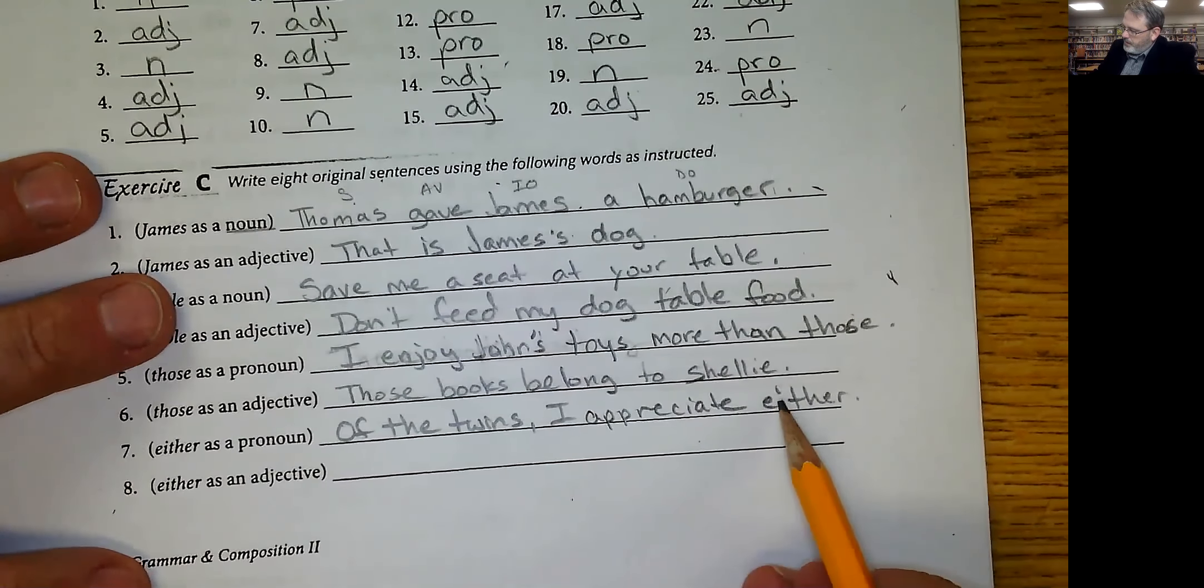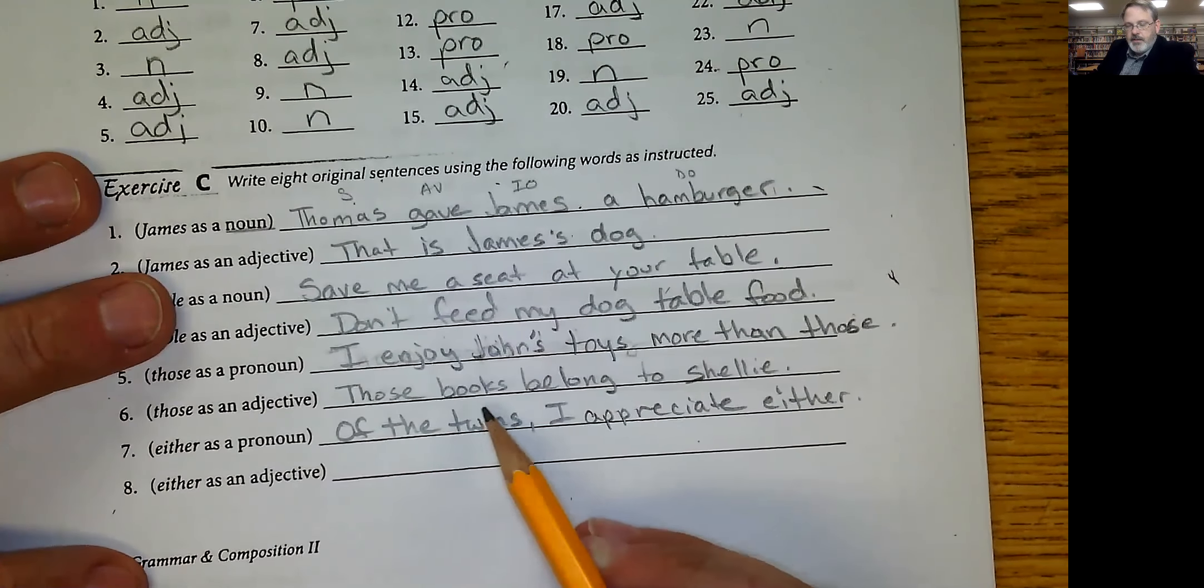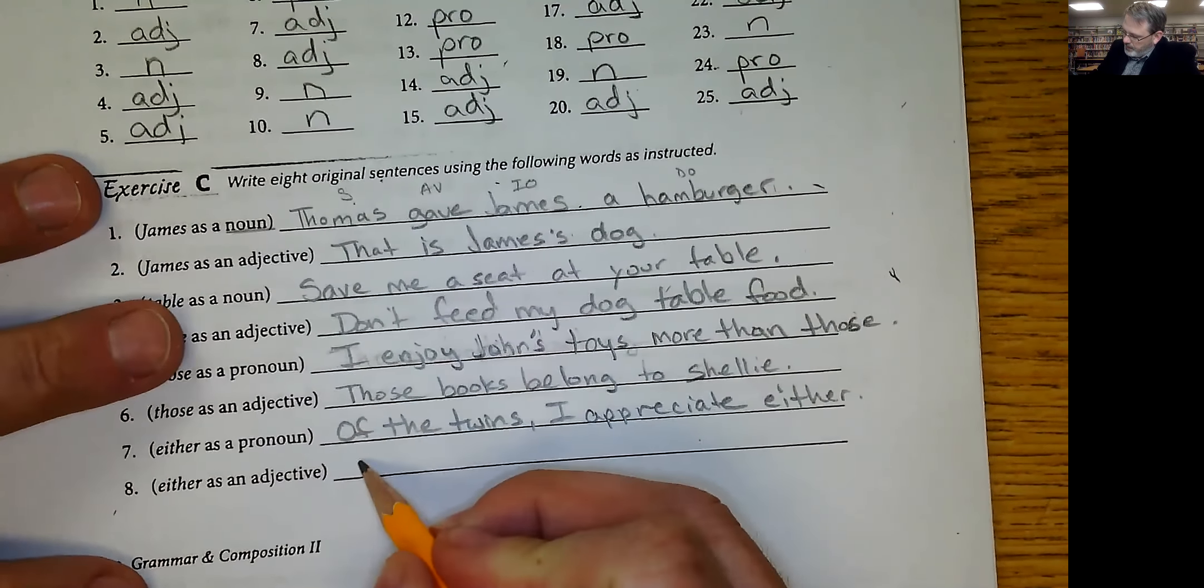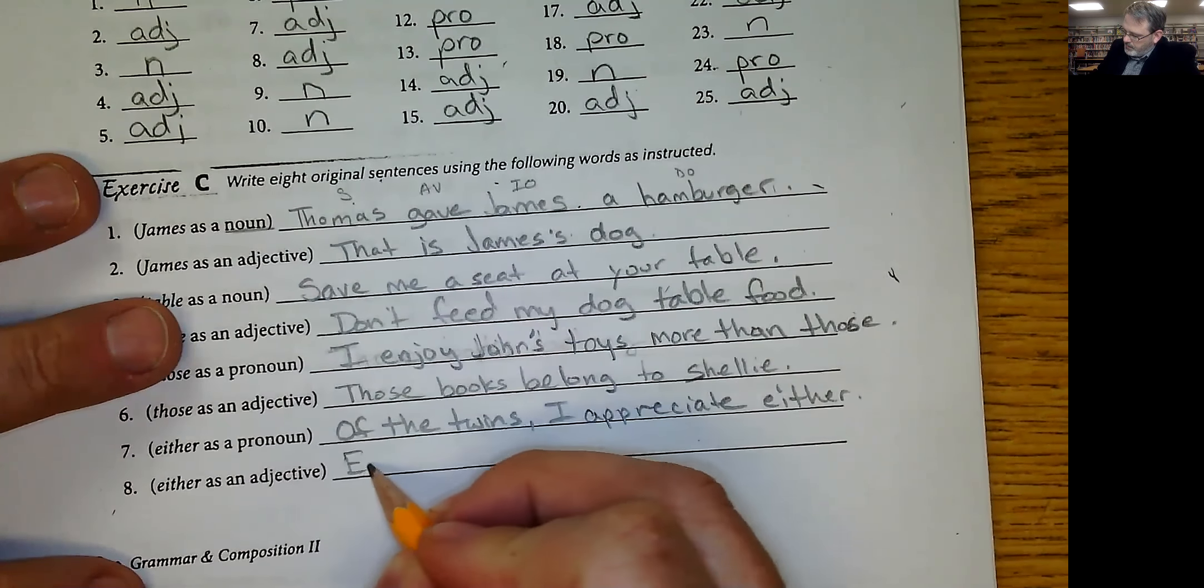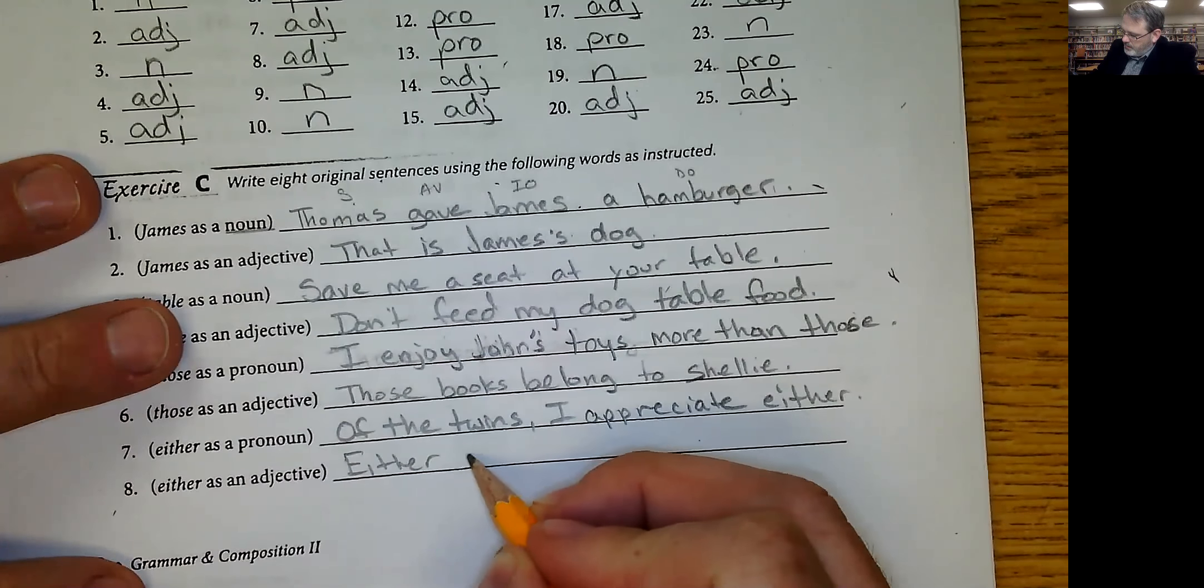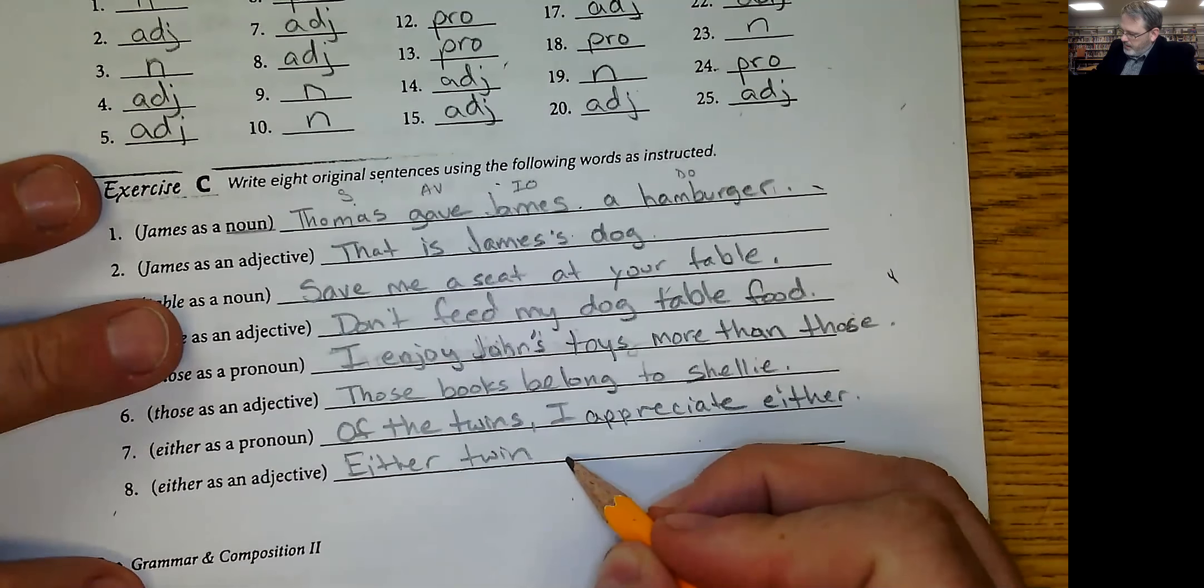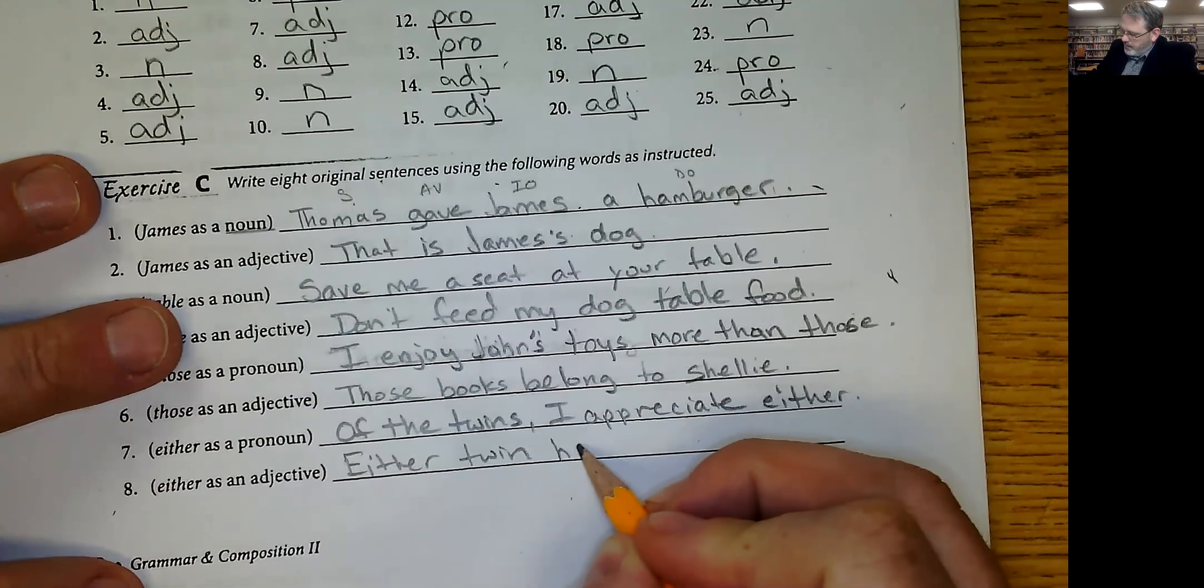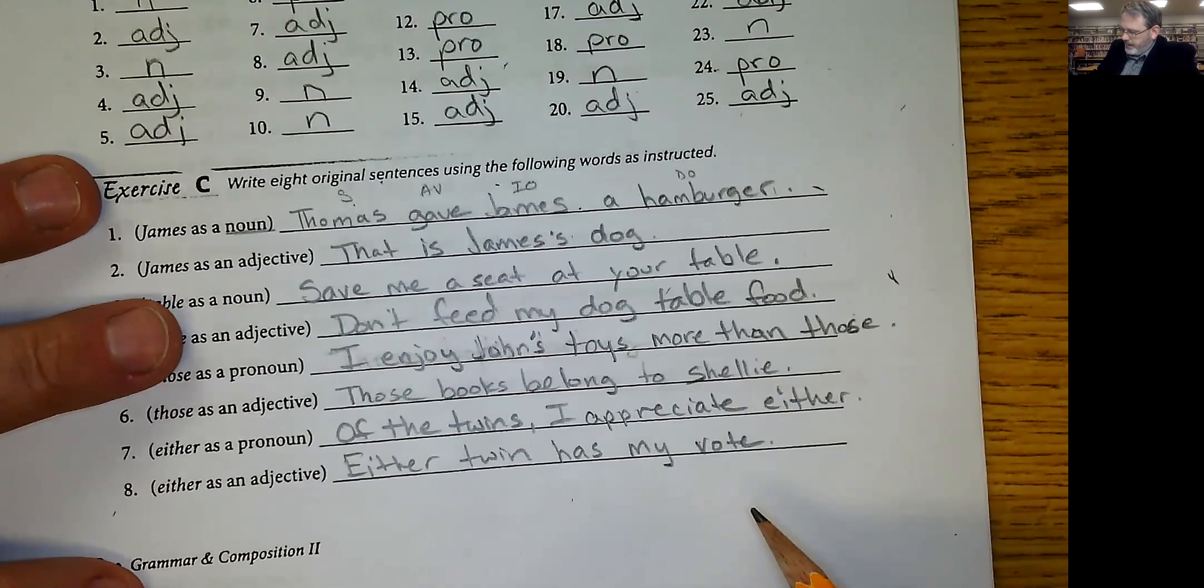So either is a pronoun and the twins, one or the other twin, they both individually are the antecedents. And either is an adjective. Let's see. Either twin has my vote, I guess. We'll say that. So this and that are the same. We're going to change this one.